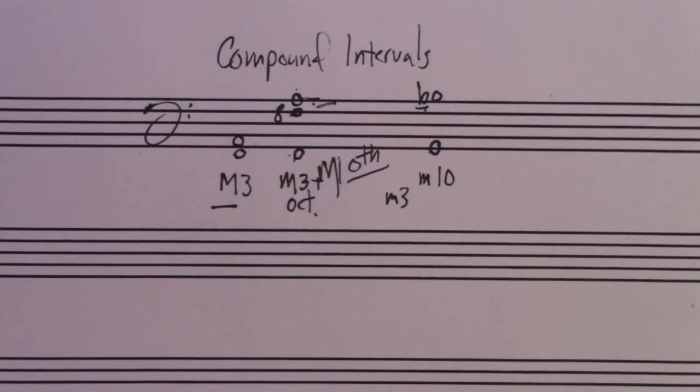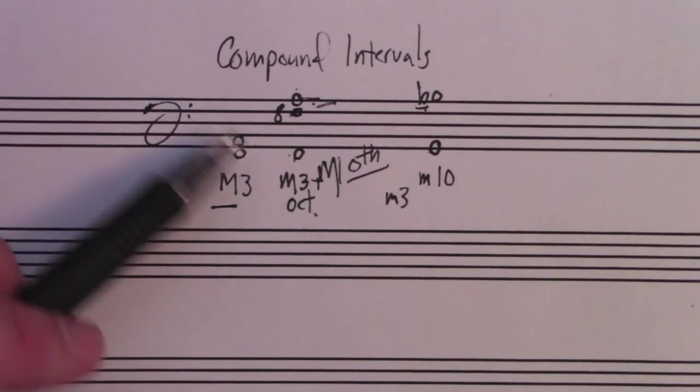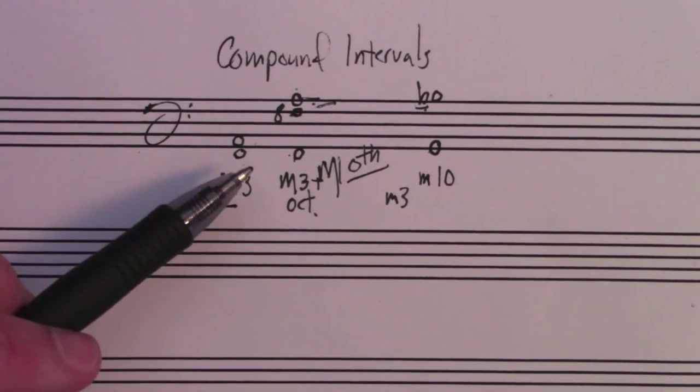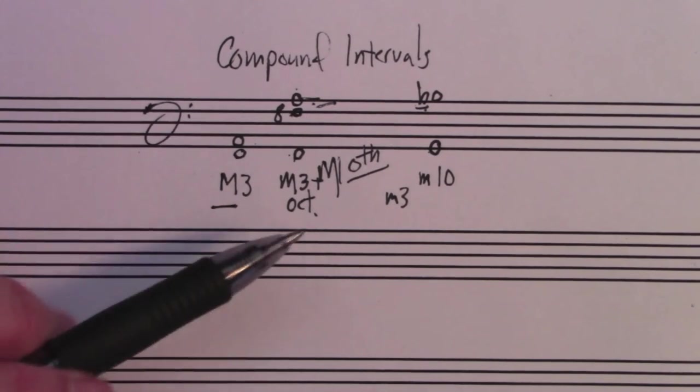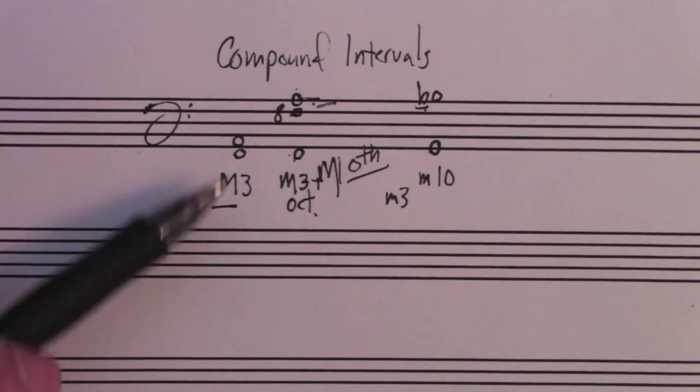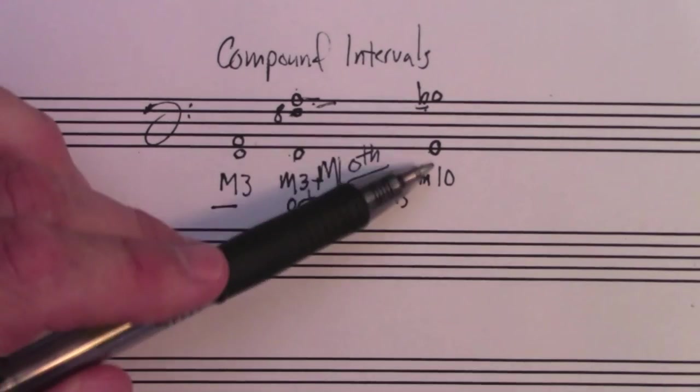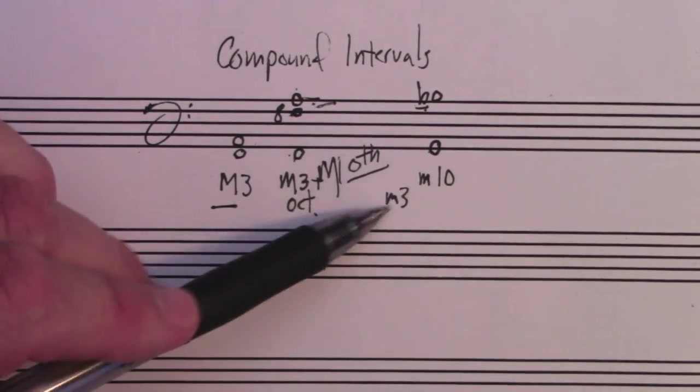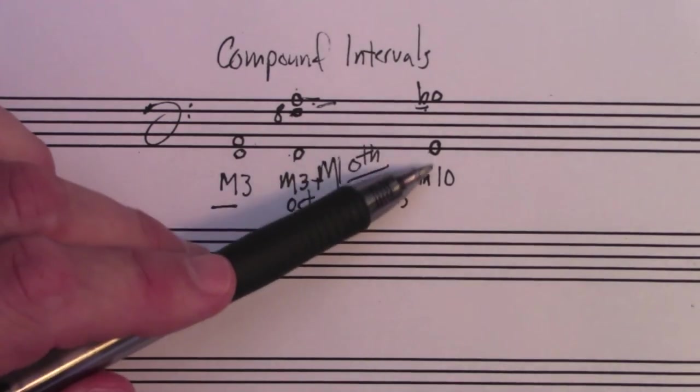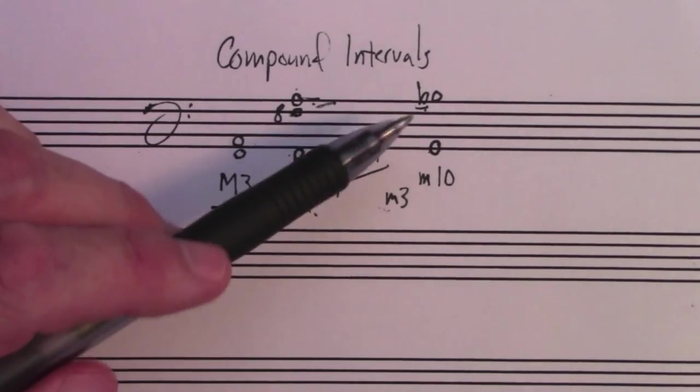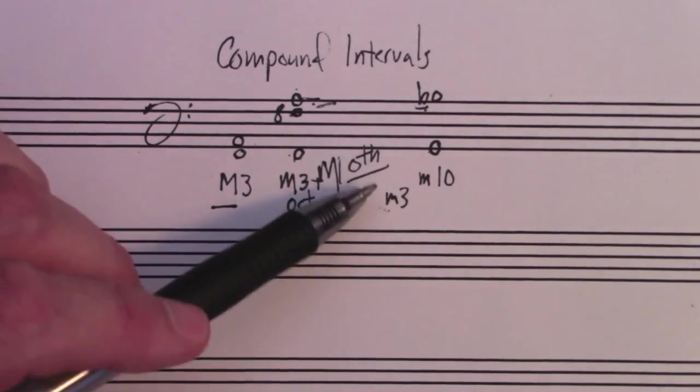That's a compound interval. A compound interval is simply an interval more than an octave. And it's like a fraction where we can reduce it. Yes, this is a tenth, and a tenth is different from a third. However, they will sound very similar. And we could refer to this as a minor tenth or as a minor third plus an octave.